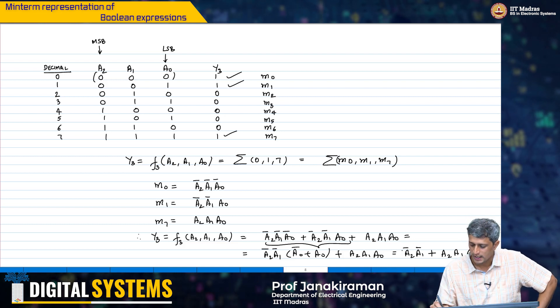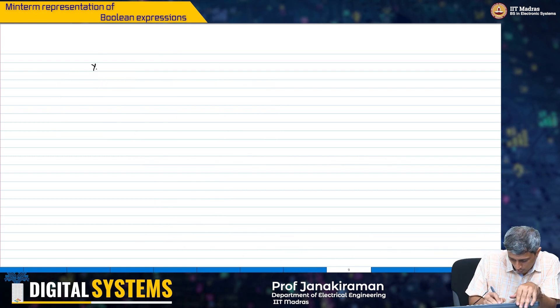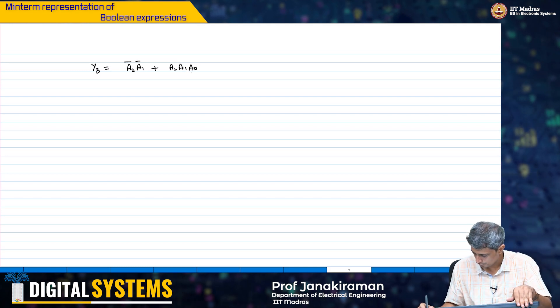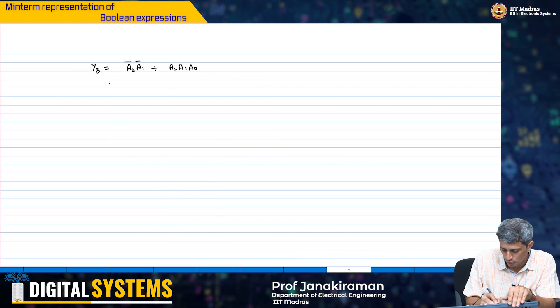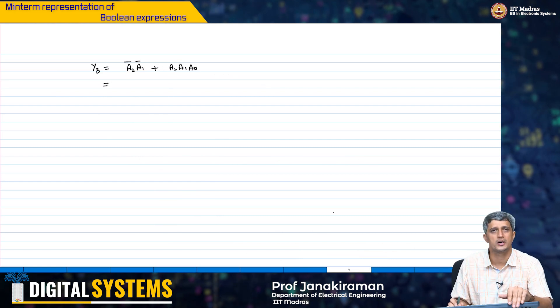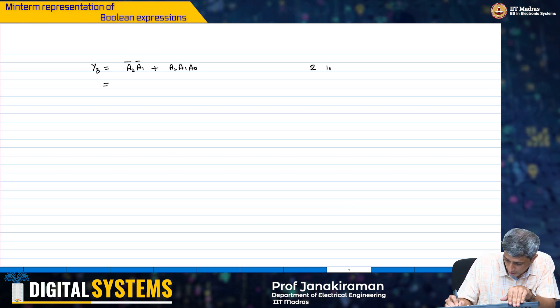So, if we try to go ahead and implement this function, let us look at it. y3 we said is a2 bar, a1 bar plus a2, a1, a0. So, again how many input AND gates, how many inverters do I need? To get a1 bar and a2 bar, clearly I need 2 inverters.